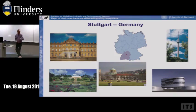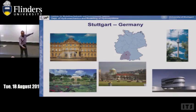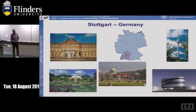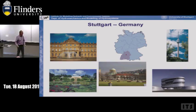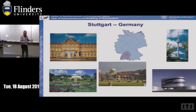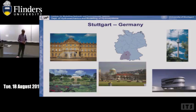Stuttgart is the capital of the state of Baden-Württemberg, and it's famous for the automotive industry — the two main headquarters are Mercedes and Porsche. Stuttgart also has the first TV tower built worldwide, and the Museum for Mobility, which is really impressive — you can see the first car developed by Gottlieb Daimler. If you have time, please come to Stuttgart and visit us.